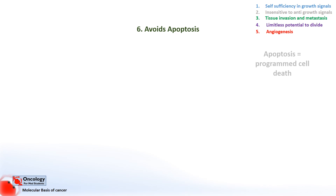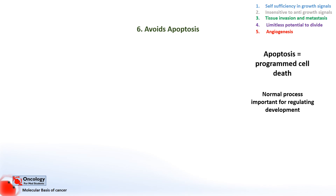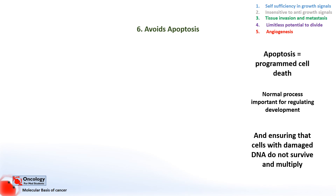The final hallmark is avoiding apoptosis. The word apoptosis comes from the Greek meaning 'falling off,' like leaves falling from a tree. It's a normal process, particularly in development, where cells purposely commit suicide for the good of the organism. One important instance where cells undergo apoptosis is when they detect damage to their DNA. This would be risky to pass on to the next generation of cells, so for the good of the organism as a whole the cell will kill itself. Cancerous cells, to pass on their mutations, have to be able to ignore these signals.